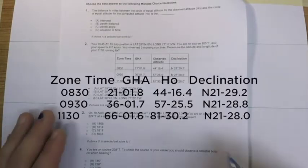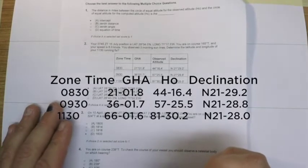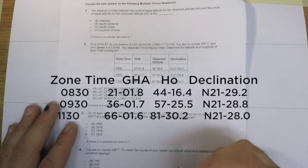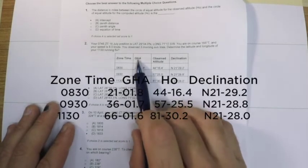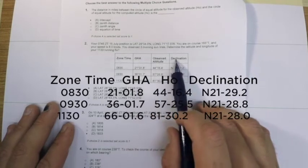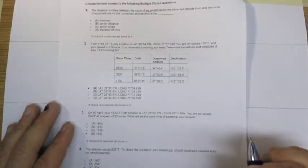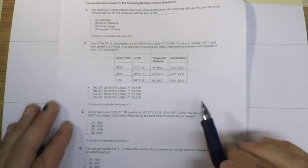So typically when we're doing a sight reduction for a sunline we have to worry about declination and GHA and the geographic position of the body, but in this case they provided the fully solved GHA, the fully solved declination, and the observed altitude already corrected for index error, refraction, all that kind of stuff, so we don't have to do it. We can just call this HO, declination, and GHA and move on from there.